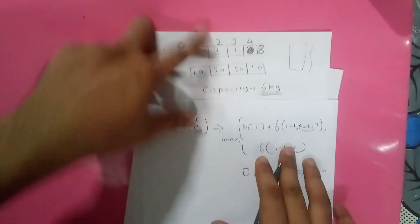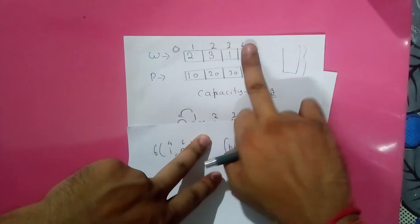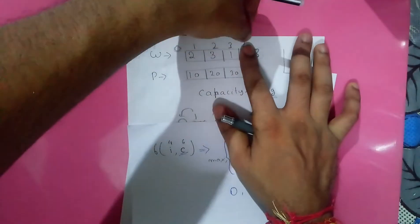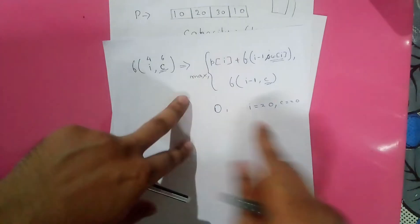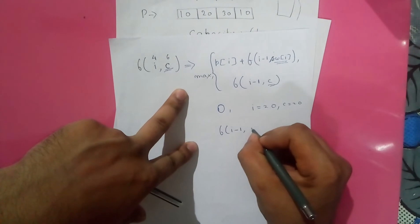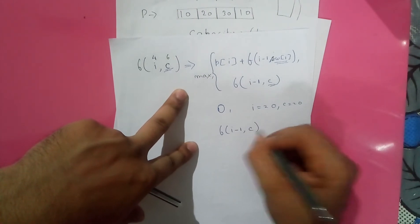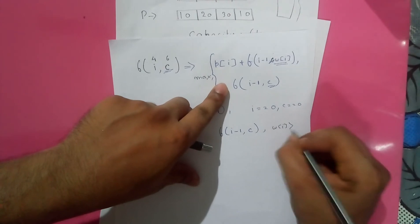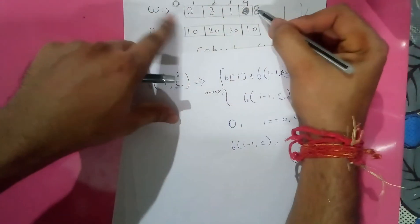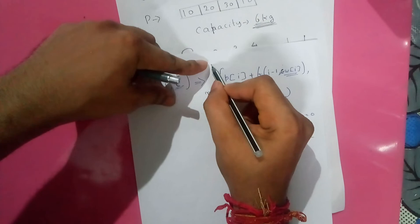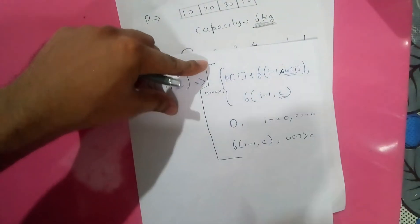One more condition: if the current item weight W[i] is greater than the remaining capacity C — for example, if an item weighs 8 kg but the knapsack only has 6 kg — we cannot include it. In this case we must skip the item, so we call the function with i−1 and the same capacity C unchanged. This completes the full recursive equation.